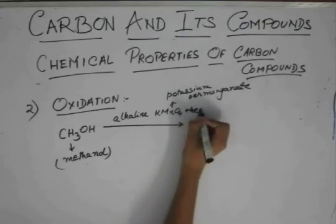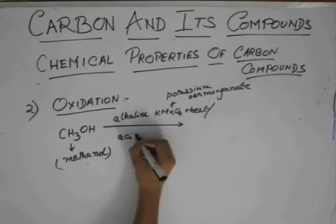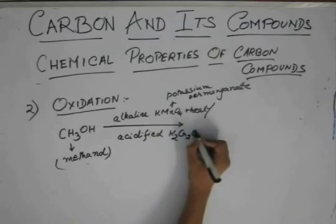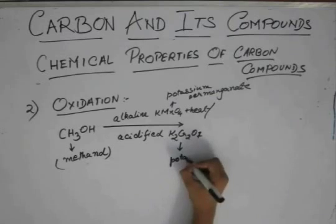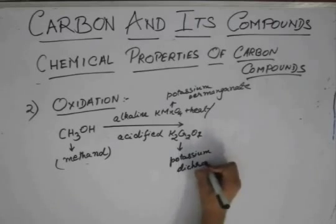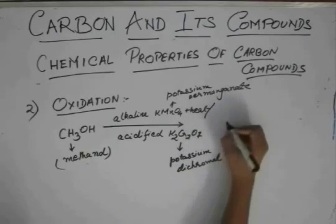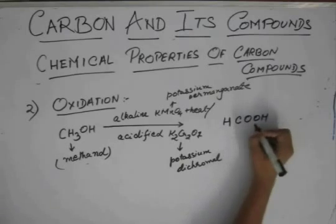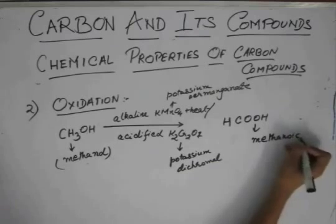And heat, or if you treat it with acidified K2Cr2O7, this is potassium dichromate. You get this HCOOH, which is your methanoic acid.